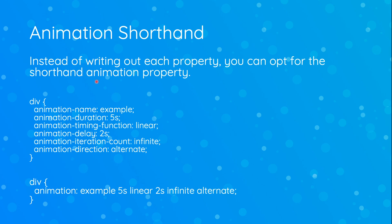Finally, we have the animation shorthand property, which allows you to combine all these properties into one, making it more condensed and taking up fewer lines in your stylesheet. As you can see, we have six different properties. Using the animation shorthand cleans up your code quite a bit. There's no particular order you have to define these in, but we went top to bottom: name, duration, timing function, delay, iteration count, and animation direction.